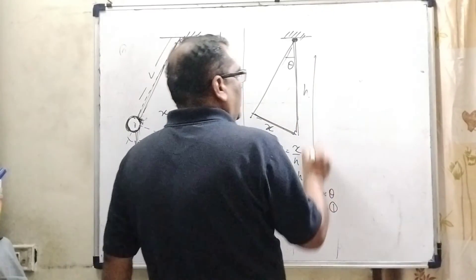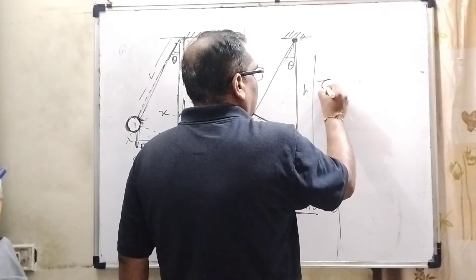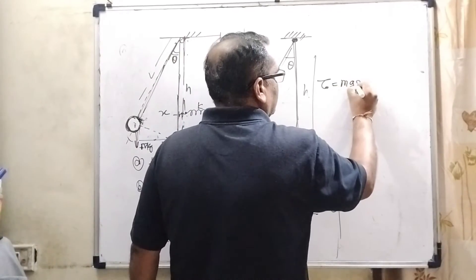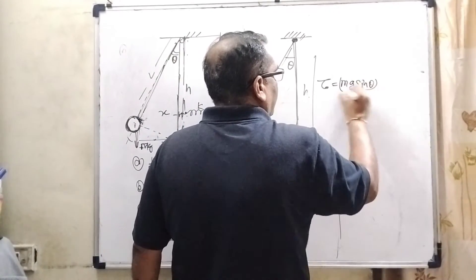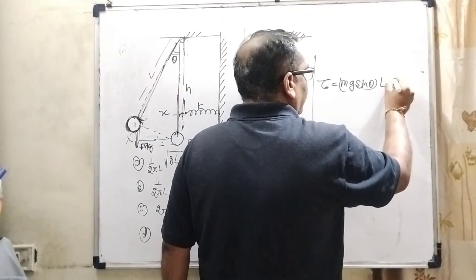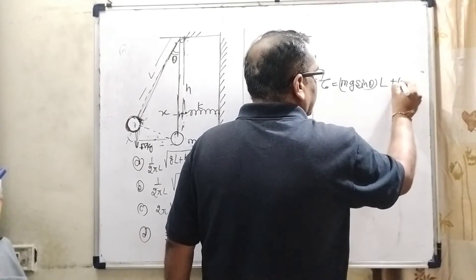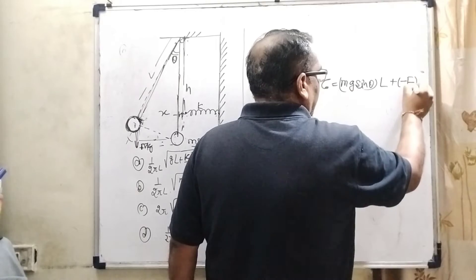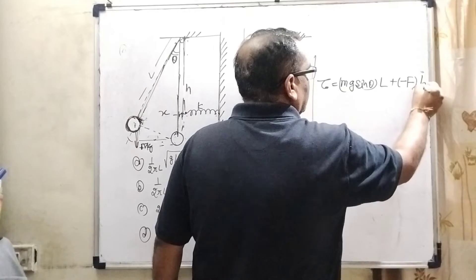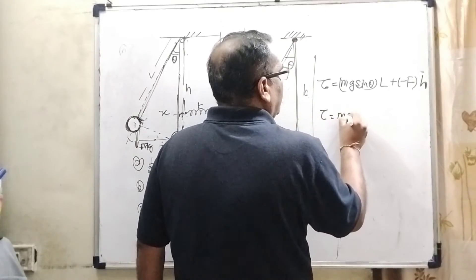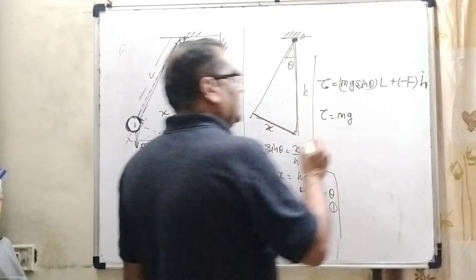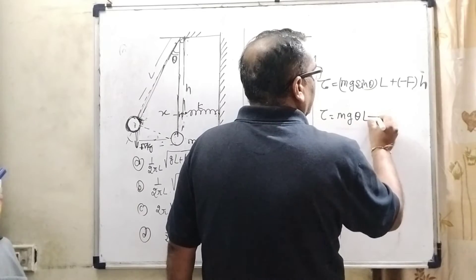Now, we have to calculate the torque that is denoted by tau. So, we get Mg component that is Mg sin theta and length that is Mg sin theta and L. And second torque we get from the spring. But the direction is negative. So, minus F. And that is total height that is H. So, tau equal to Mg here again sin theta. Theta is very small. So, sin theta can be considered theta. So, here theta L minus F.